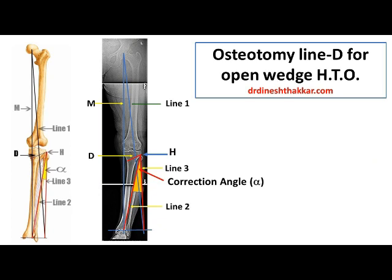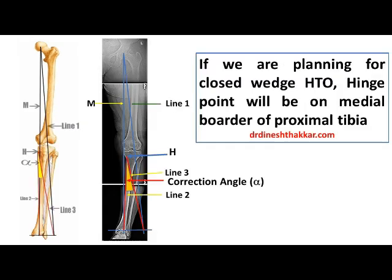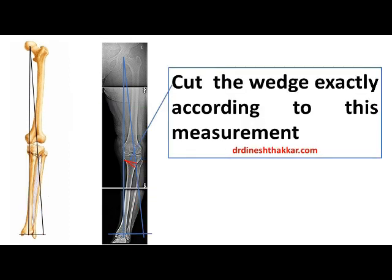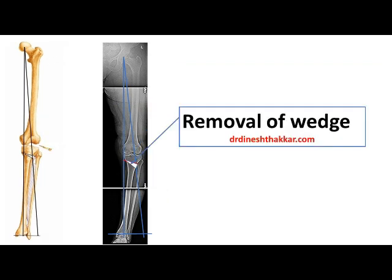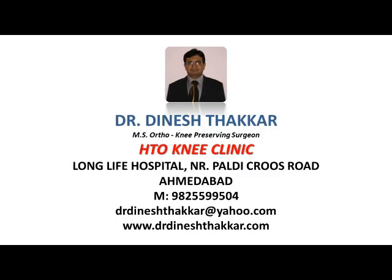If we open the wedge according to this measurement while doing open wedge osteotomy, we can shift the weight-bearing axis exactly where we have planned. Similarly, if we are planning for closed wedge HTO, the hinge point H will be on the medial side of the proximal tibia. If we remove the wedge exactly according to this measurement and close the osteotomy site, we can shift the weight-bearing axis exactly where we have planned.